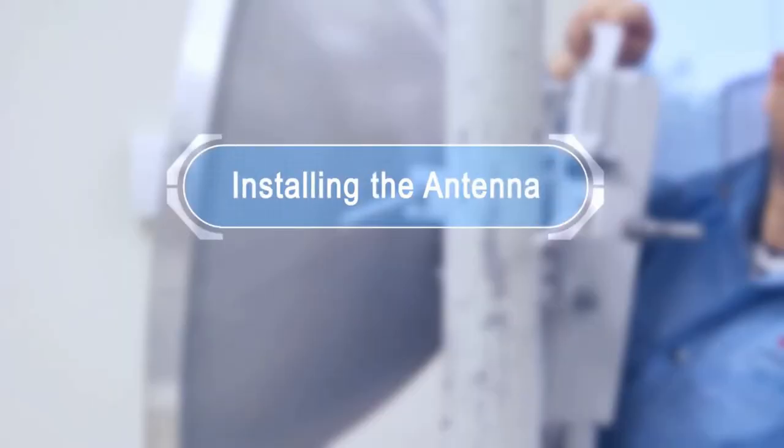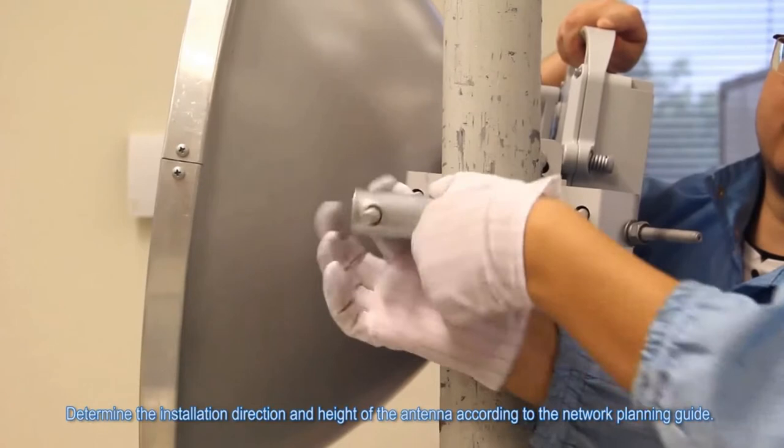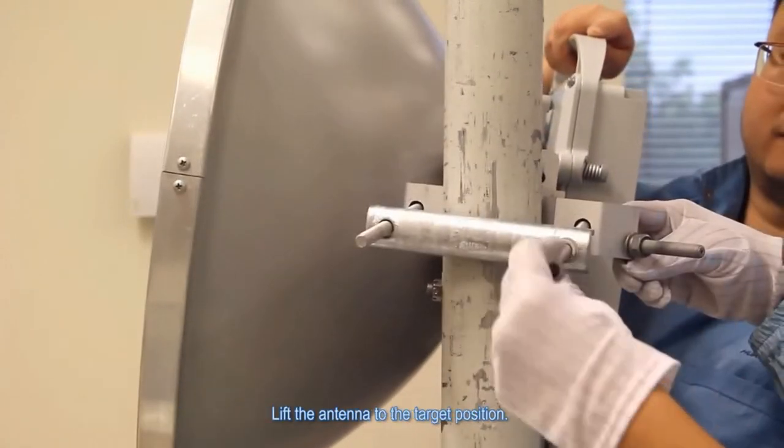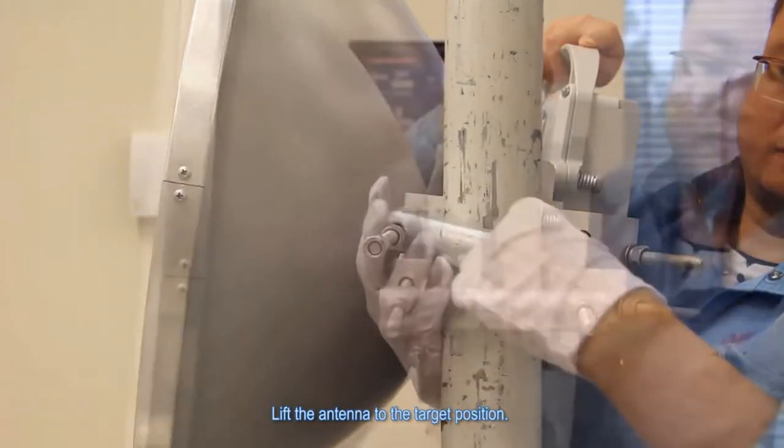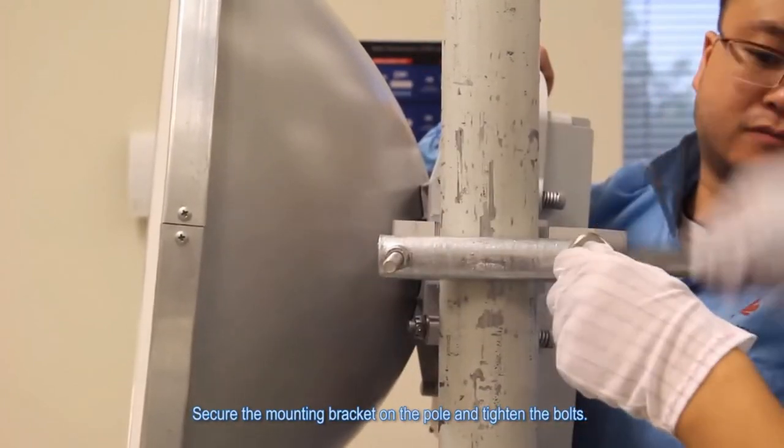Installing the antenna. Determine the installation direction and height of the antenna according to the network planning guide. Lift the antenna to the target position. Secure the mounting bracket on the pole and tighten the bolts.